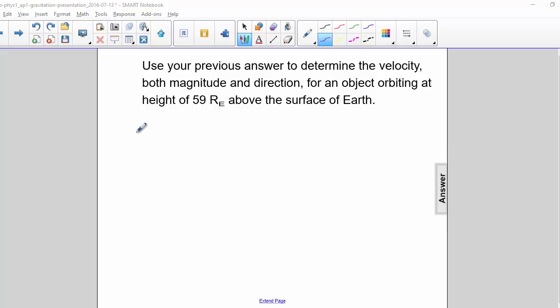Use your previous answer to determine the velocity, both magnitude and direction, for an object orbiting at a height of 59 times the Earth's radius above the surface of the Earth. We can use v equals the square root of gr.